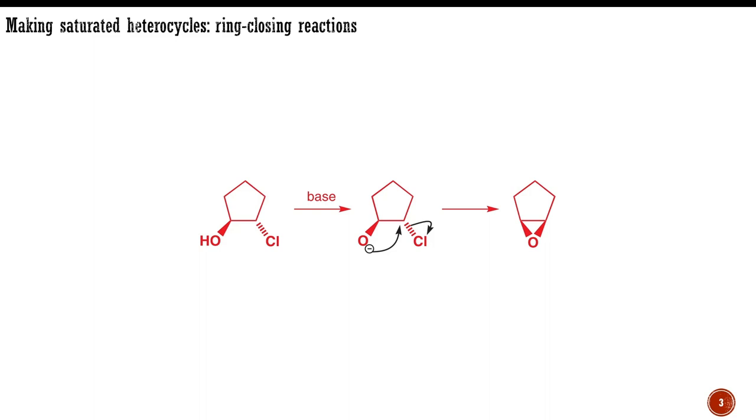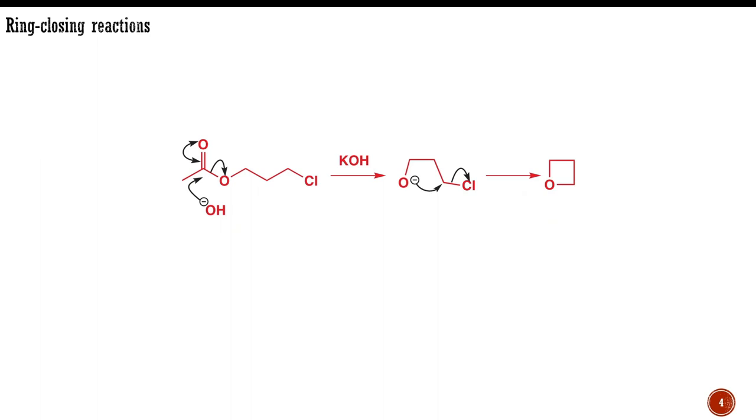Ring-closing reactions are, of course, just the opposite of the ring-opening reactions we talked about earlier, and we can start with a reaction that works well in both directions, ring-closure to form an epoxide. The same method can also be used to generate larger cyclic ethers.